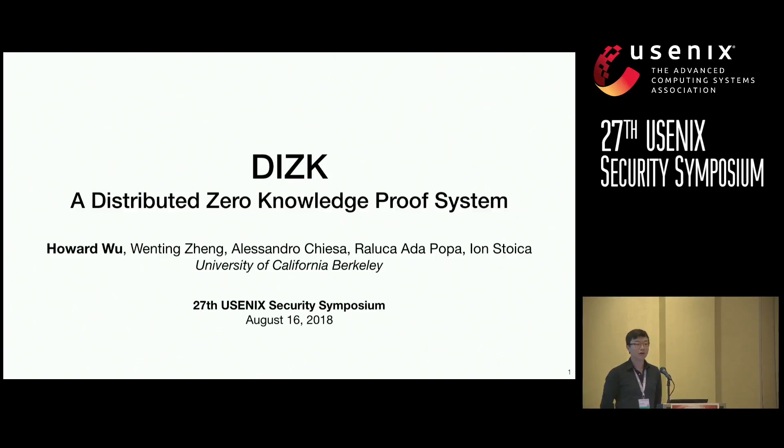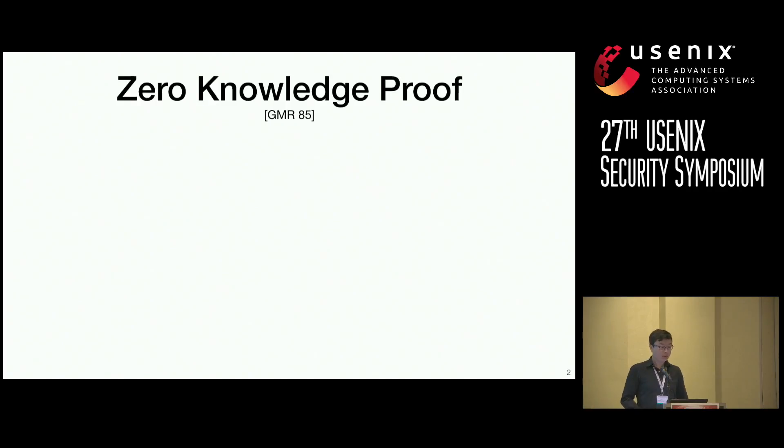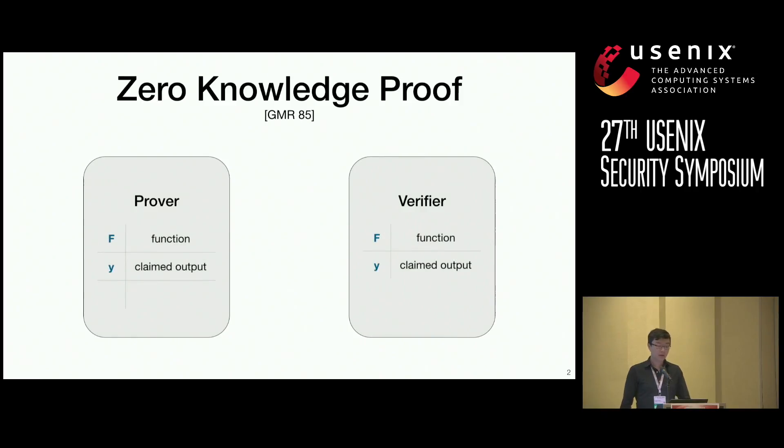So to begin, what is a zero-knowledge proof? Well, a zero-knowledge proof involves two parties, a prover and a verifier, and both know of a public function f and some claimed output y. The prover says, hey, I know some secret input x such that f of x is equal to y. And the verifier will challenge the prover and they play this interactive game, after which a prover will convince the verifier that they know this claim.